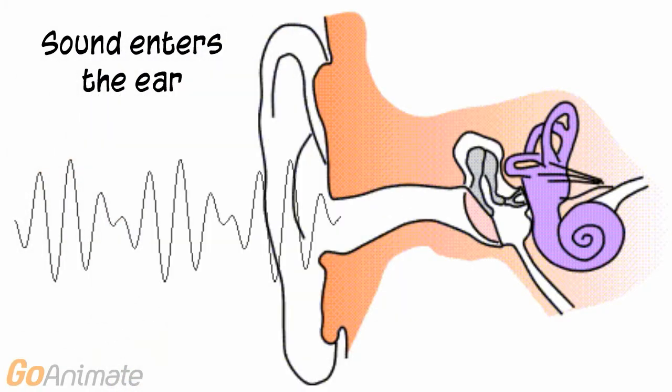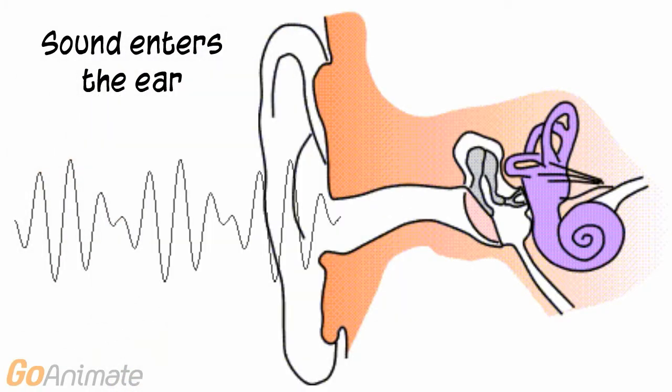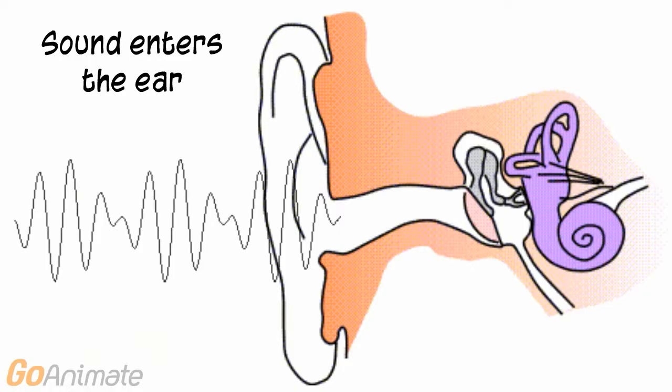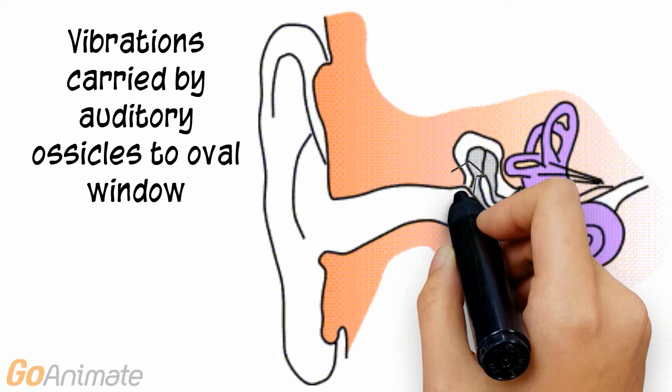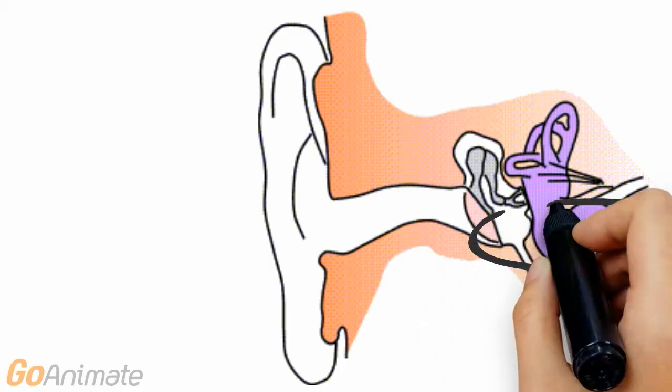Let's look at how sound is processed by the ear. Sound waves enter the external auditory meatus and travel to the tympanic membrane, causing it to vibrate. These vibrations are carried by the malleus, incus, and stapes to the inner ear. The stapes connects to the inner ear at the oval window.